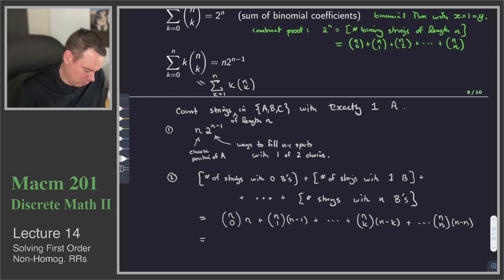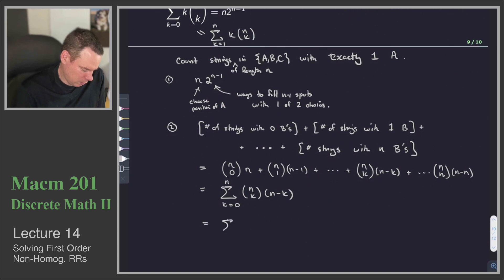So what that means is we can write this down in our compact form. It's k goes from 0 to n, n choose k, n minus k. But because this binomial coefficient has symmetry, we can write it as n choose n minus k. I've done that because now I've matched up the n minus k here and the n minus k here.